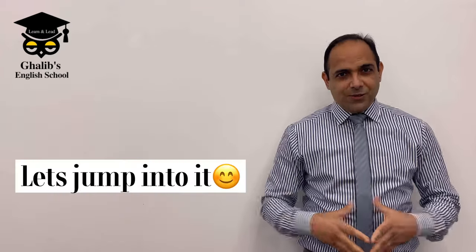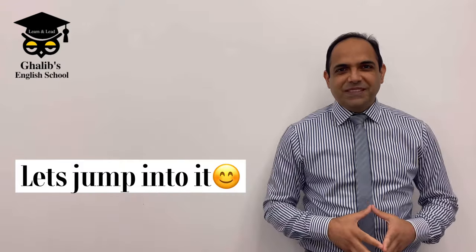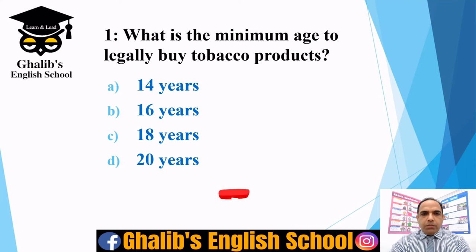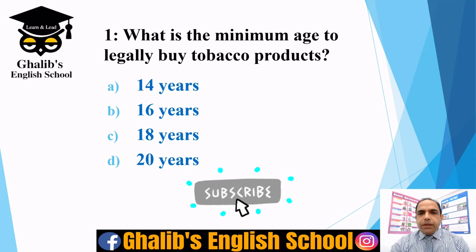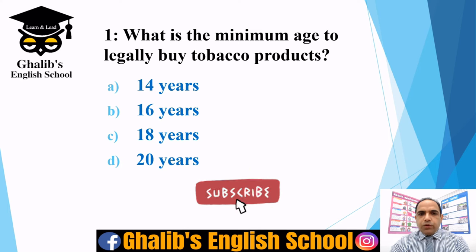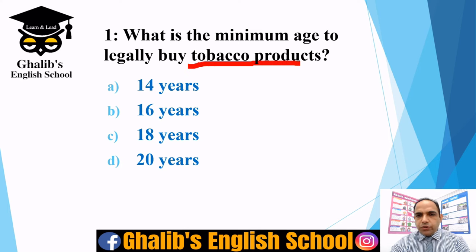Question number one: what is the minimum age to legally buy tobacco products? If you want to buy tobacco products in the UK, you must be 18 years old. Under age 16 is not allowed — you must be at least 18 or above.